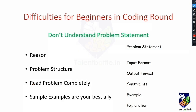Focus on those key sentences only; for the rest, you can quickly glance through. Sample examples are your best friend. It is quite often that even after reading the problem statement carefully, you do not fully understand the complete meaning. In that case, keep re-reading the input format, output format, and constraints. The biggest help will be the example — try to understand why exactly the given output is produced from the given input. If an explanation is provided, it will help you understand the problem in more depth. Make sure you understand the example completely.